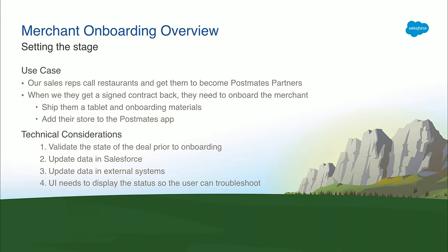There are some technical considerations. We need to validate that the deal is in a state that it can be onboarded, meaning anyone can't just go to any opportunity and say they want to put a restaurant on Postmates. We need to have a contract and other parameters in there. We're going to update data in Salesforce and in external systems. The UI needs to be able to display any kind of error messaging so the user can troubleshoot. The user is able to have a conversation of sorts with the external system — it'll say it's onboarding, and then the system will ask them to pick from some kind of question, and they go back and forth. So we need to have this user interaction.